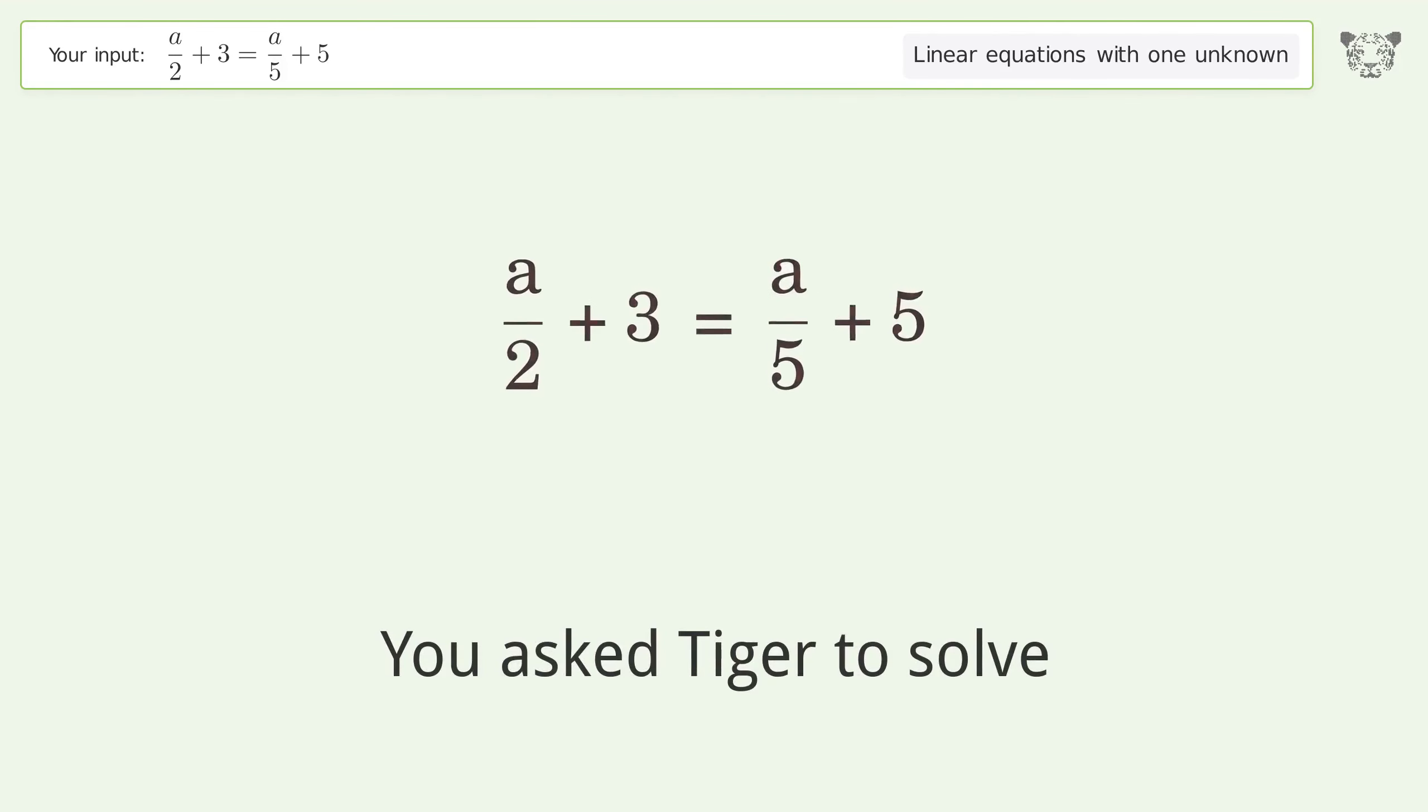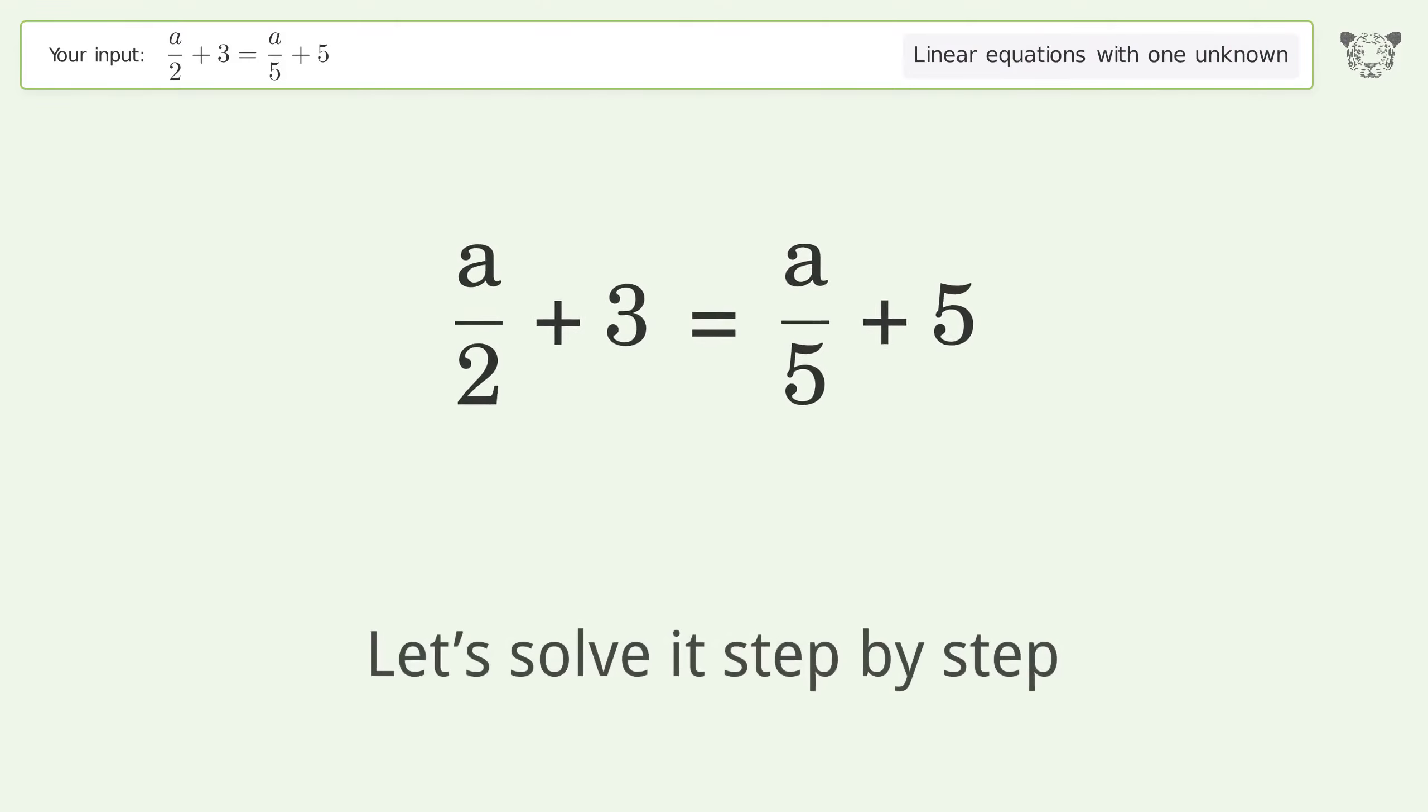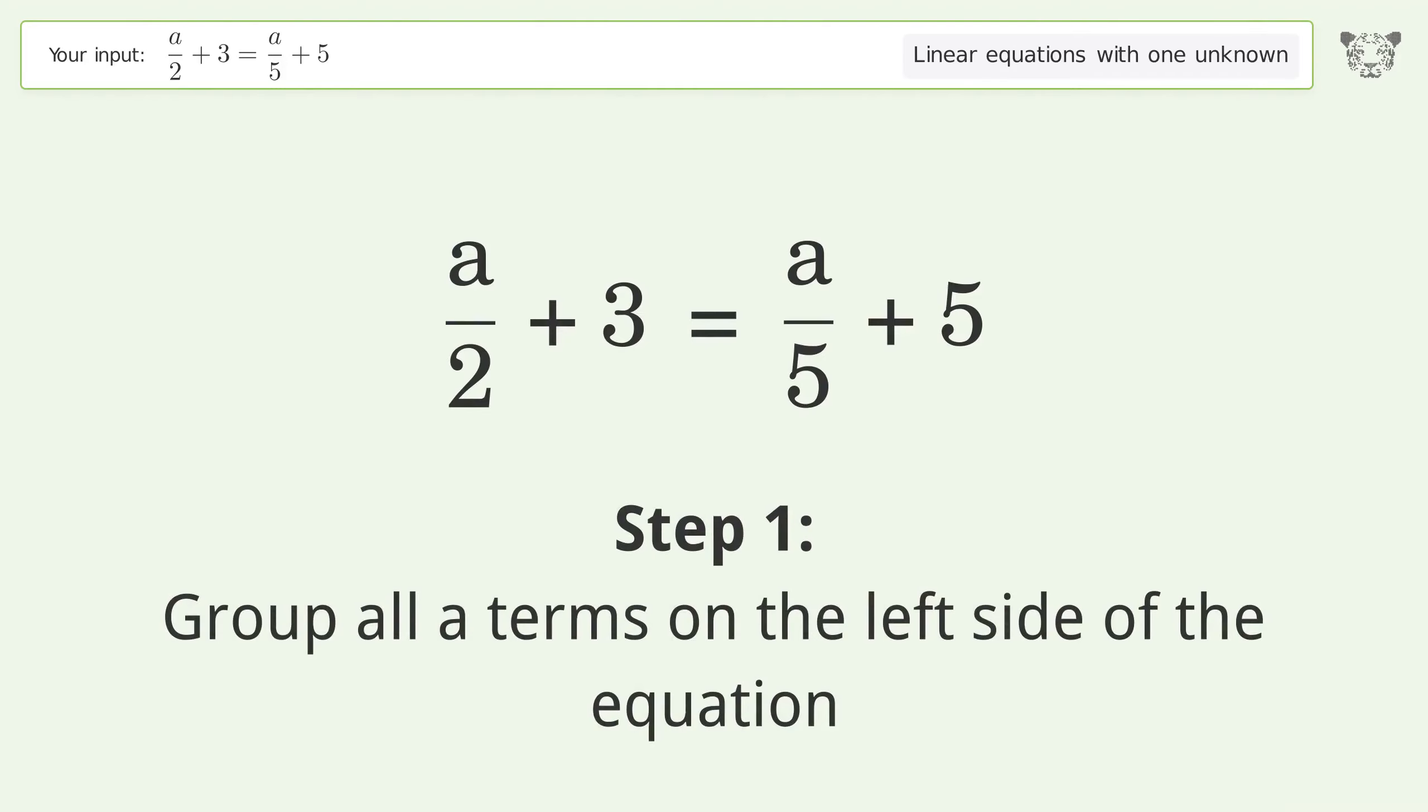You asked Tiger to solve this. This deals with linear equations with one unknown. The final result is a equals 20 over 3. Let's solve it step by step. Group all a terms on the left side of the equation.